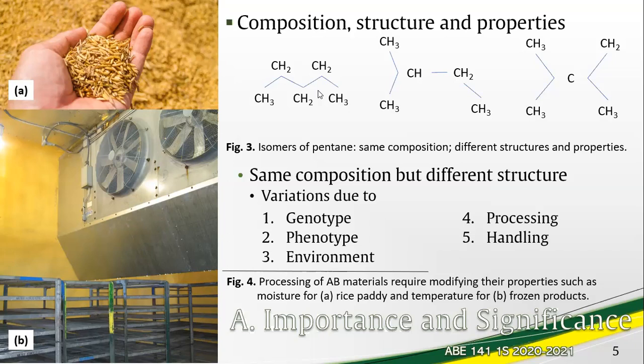Besides the inherent individual variations, biological materials have inherent genetic variations. For a simpler appreciation of the composition-structure relationship, take the case of the isomers of pentane as shown. These materials have the same composition — same number of atoms — but different structure. In biological materials, note the adage: no two thumbprints are the same. Composition varies according to the genetic and phenotypic, environmental, processing, and handling conditions of the material.